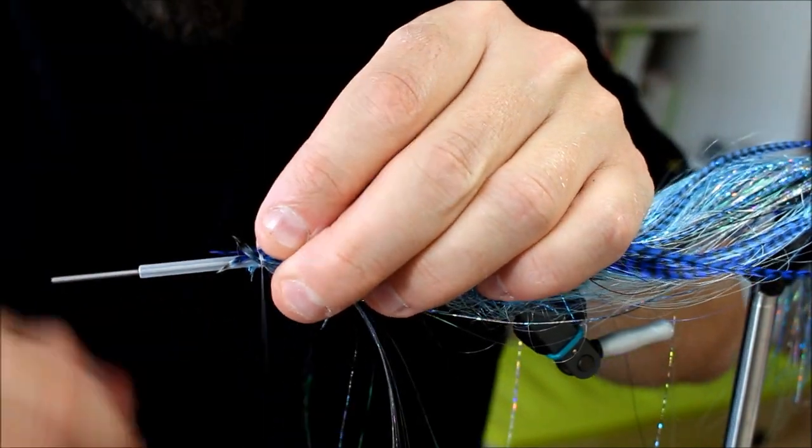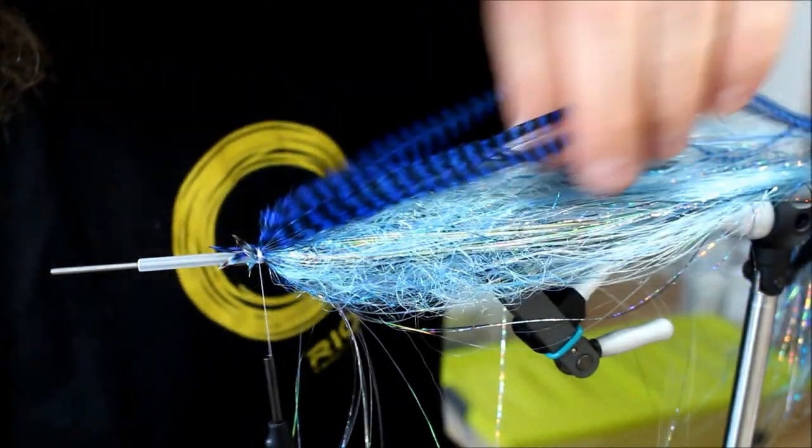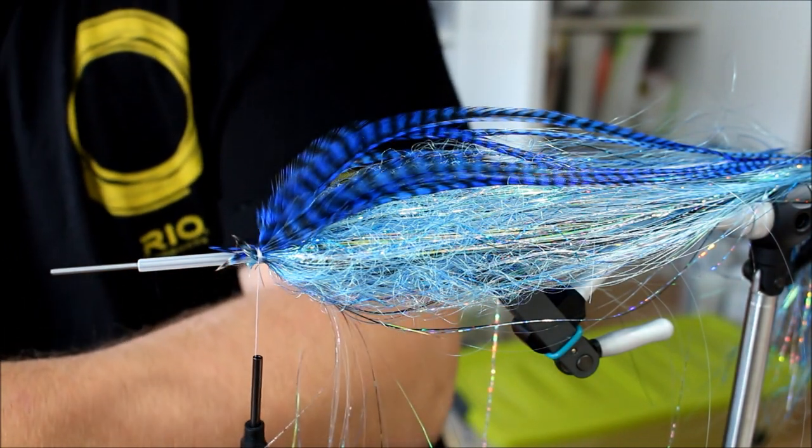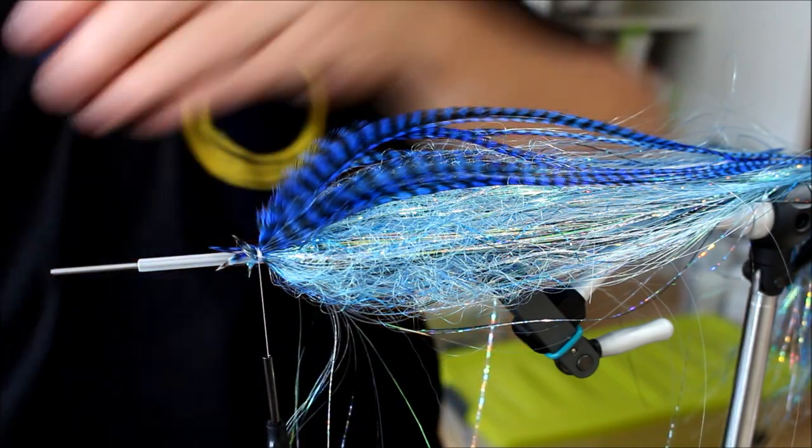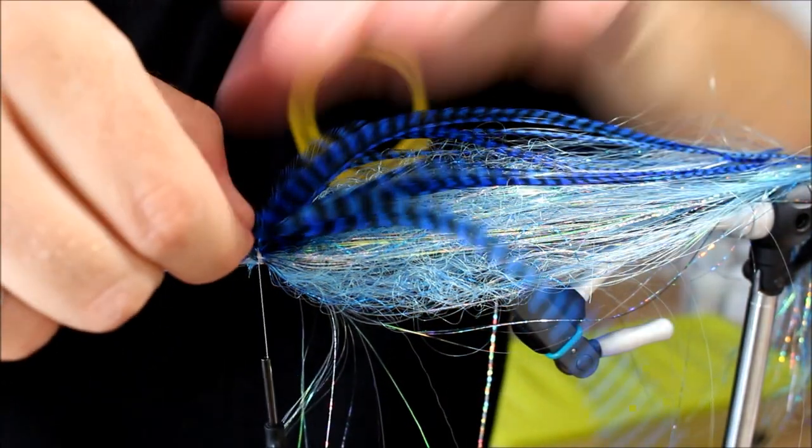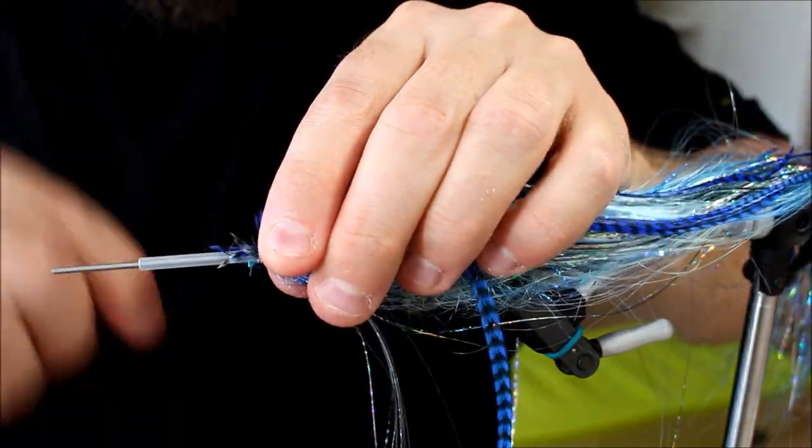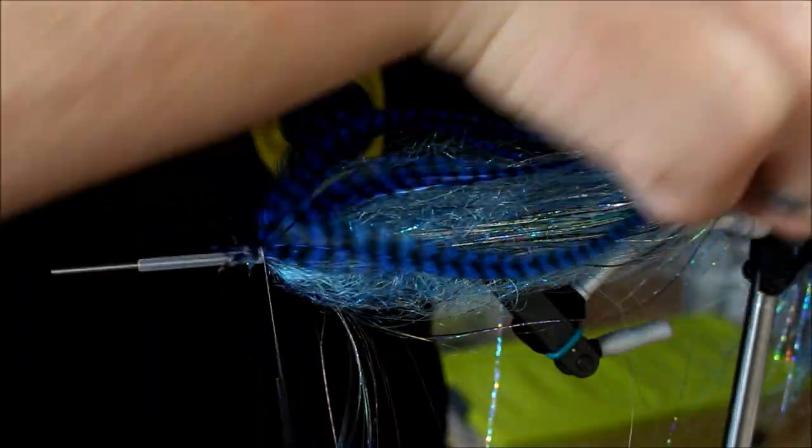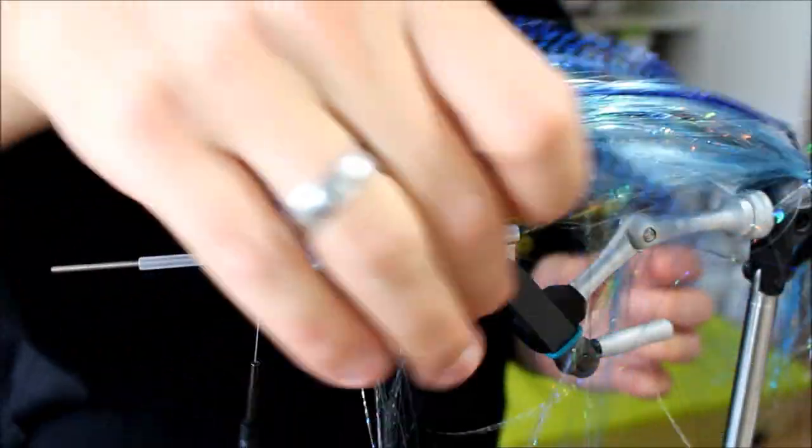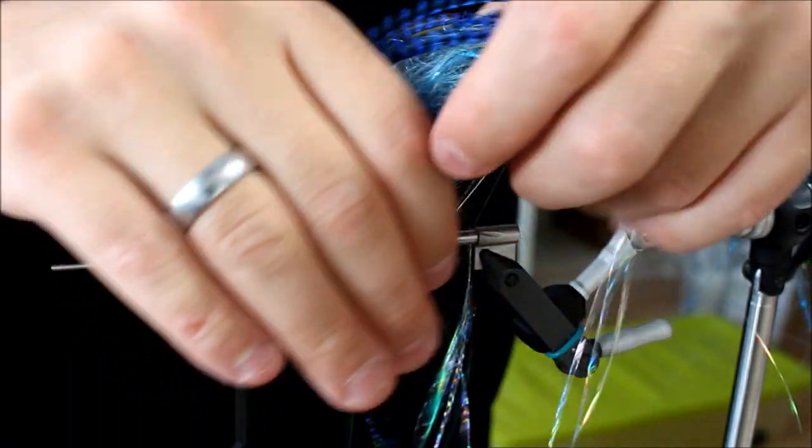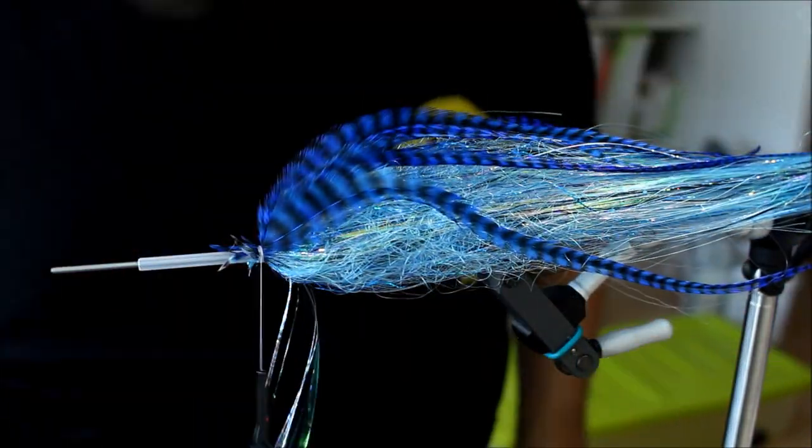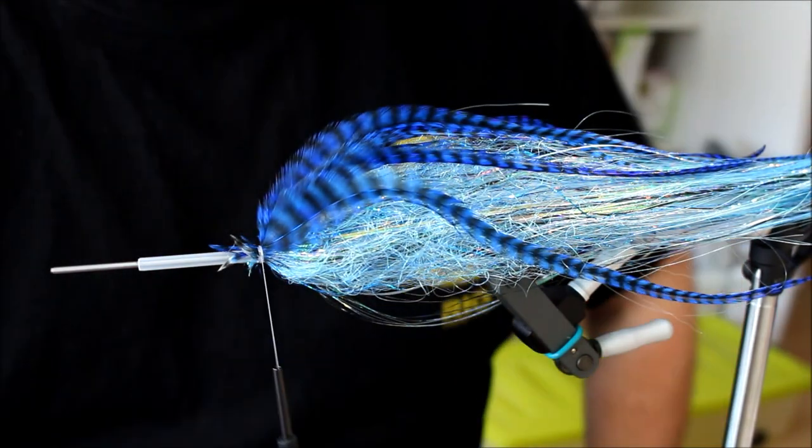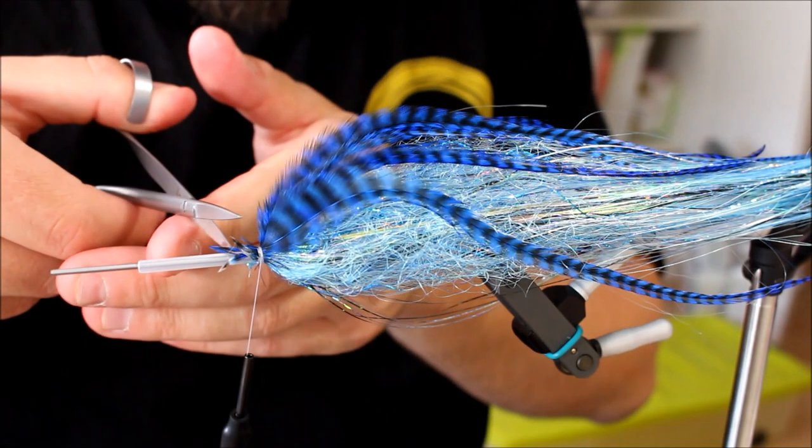Bonitos are quite fun to catch as well, though, on lighter tackle of course. Oh man, small tunas on fly is just a blast. I got some yellow fins up to around 6 kilos on a 10 weight in Mexico, and that was epic fun, really amazing action. The big dorados are fun as well, but the tunas up to around 5 kilos that I got was probably one of the coolest fights I ever had. They are just spectacular, and they swim so fast, it's unbelievable.